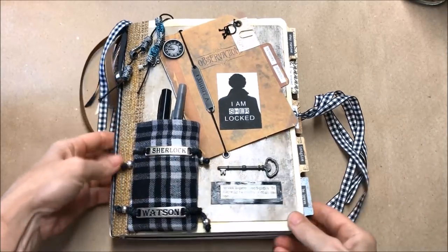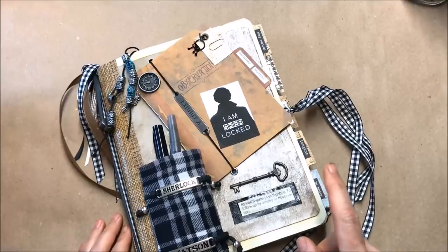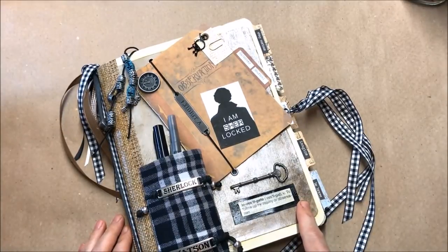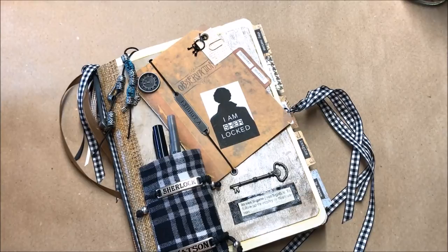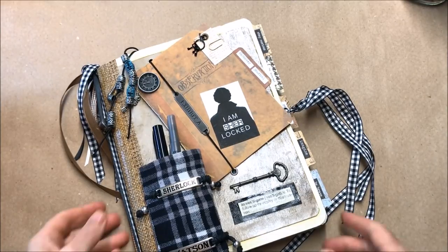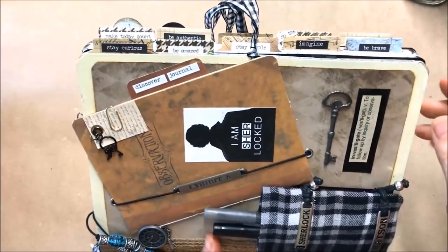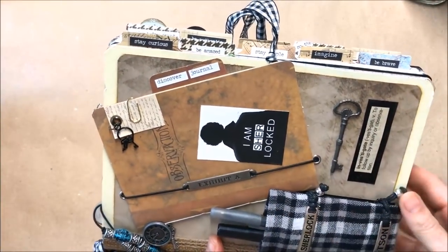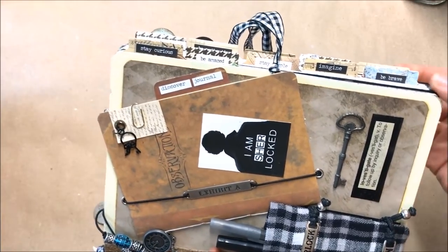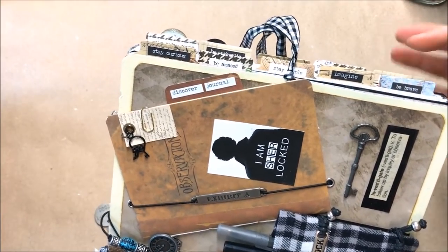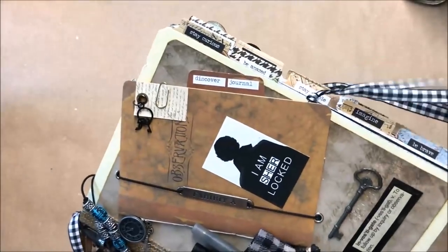This is my Sherlock journal. This is the first junk journal that I made. It's an altered composition notebook, and I put tabs all down the side of it. Paper tabs - I punched them out and I'll show you in just a minute how I do that. I used the word stickers from the Tim Holtz books.